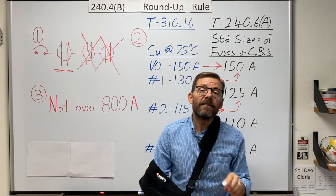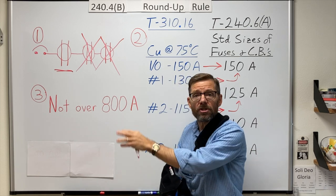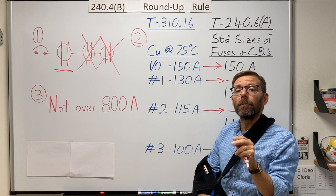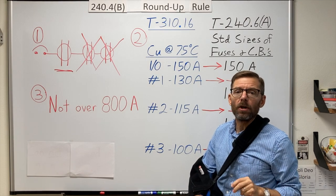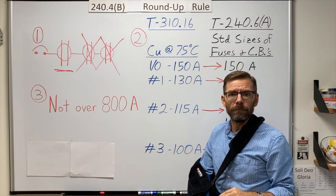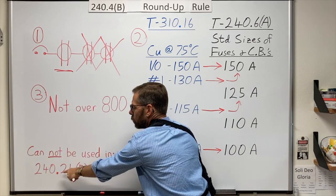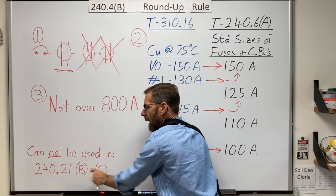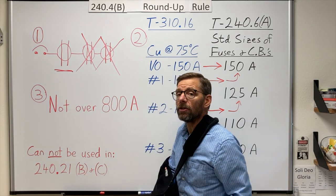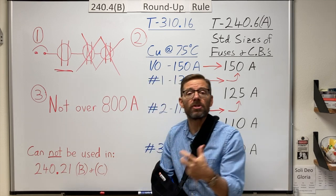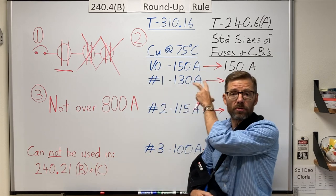So as an additional remark, even though this is a general use permissive rule, there are a couple of specific circumstances where we cannot use this rule. If I look right here, 240.21B for tap conductors, I cannot use this rule. And C for transformer secondaries, I'm not allowed to use this rule. I can use this rule for transformer primary conductors, but just not on the secondary side.